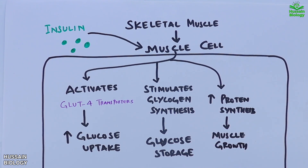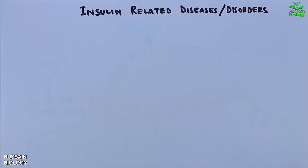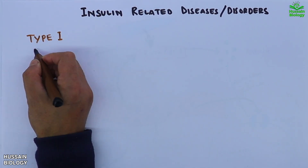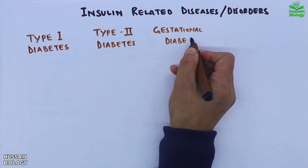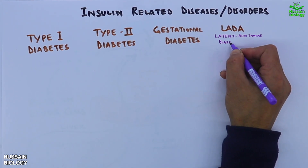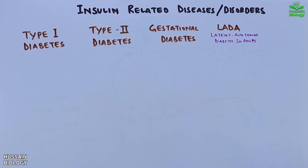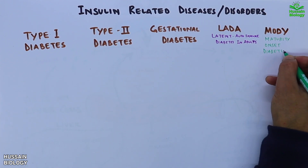So this is the basic physiology of insulin and its target organs. Now, the overview of insulin-related diseases and disorders: first we have type 1 diabetes, second is type 2 diabetes, third is gestational diabetes, fourth is LADA — latent autoimmune diabetes in adults — and fifth is MODY, maturity onset diabetes of the young.